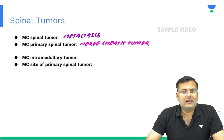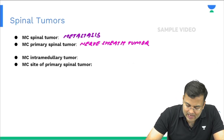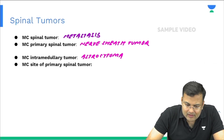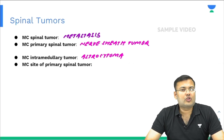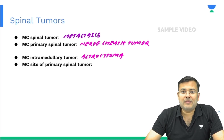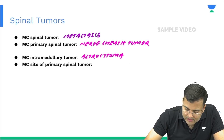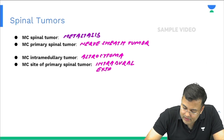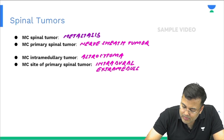What is the most common intramedullary tumor? It is astrocytoma. What is the most common site of primary spinal tumor? It is intradural extramedullary. These are the important one-liners related to spinal tumor.